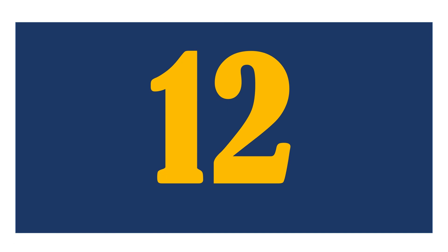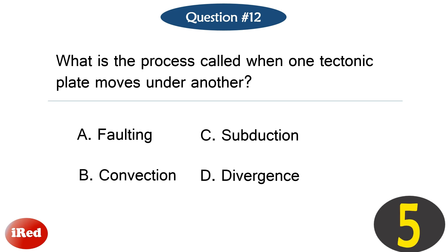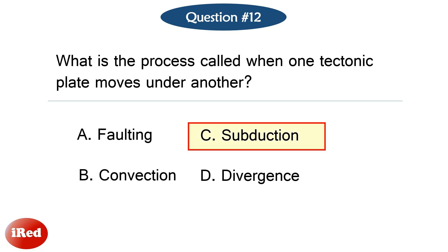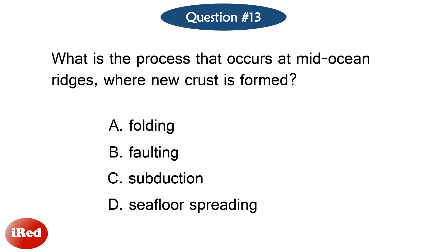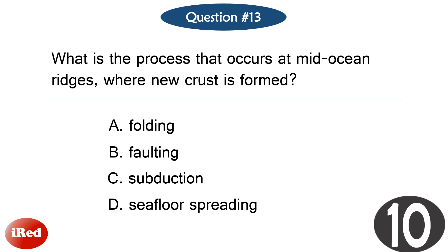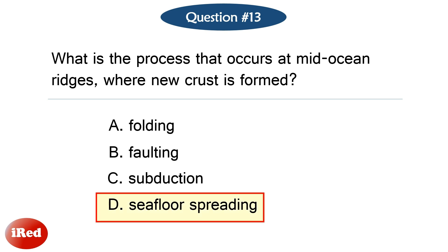Question number twelve. What is the process called when one tectonic plate moves under another? Question number thirteen: what is the process that occurs at mid-ocean ridges where new crust is formed? The correct answer is letter D: seafloor spreading.